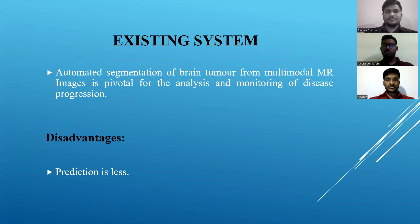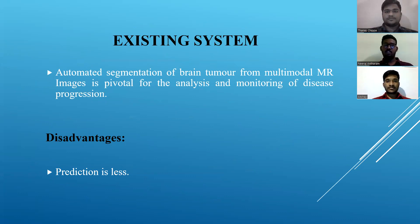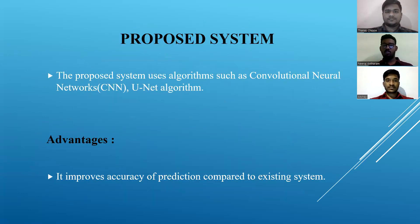Before the proposed system, the existing system was based on automated segmentation using multimodal MRI images, which was pivotal for analysis and monitoring of disease progression. The disadvantage of the existing system was that prediction and accuracy were less. We proposed a system based on Convolutional Neural Network and U-Net algorithm, and the advantage of this proposed system is that it improves accuracy and prediction compared to the existing system.